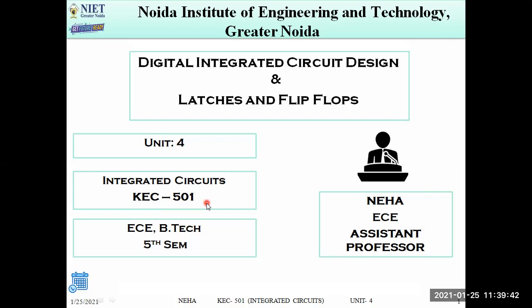In the previous lecture we reviewed the digital electronic system, studying different types of gates, the POS method, product of sum method, SOP form, K-Map, and how to convert Gray code into binary code and back from binary to Gray.